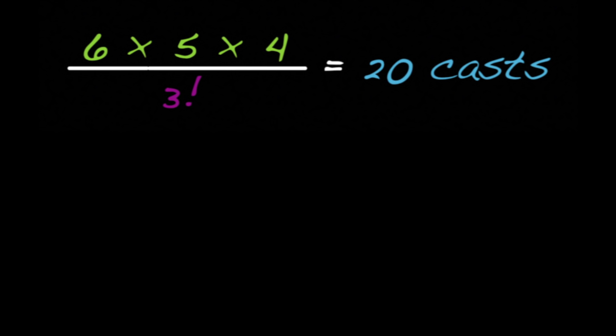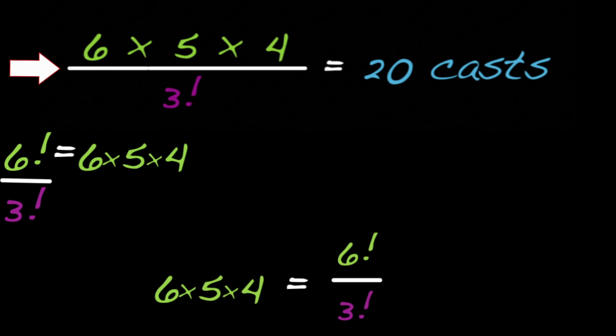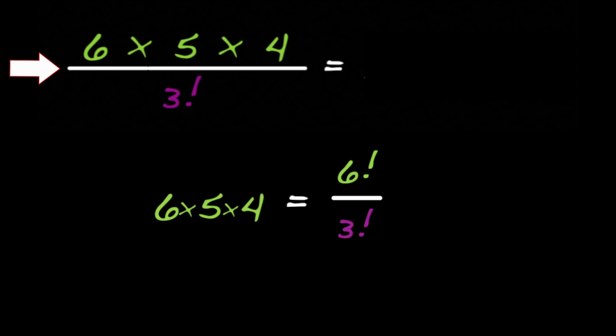First, notice that 6 times 5 times 4 looks a little like a factorial, except that it's missing the 3 times 2 times 1. That means we can write 6 times 5 times 4 using factorials as 6 factorial over 3 factorial. Because 6 factorial equals 6 times 5 times 4 times 3 factorial. So dividing by 3 factorial just leaves 6 times 5 times 4. That means we can rewrite our earlier example as 6 factorial over 3 factorial times 3 factorial.